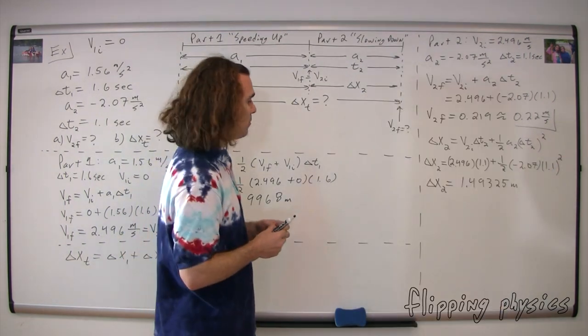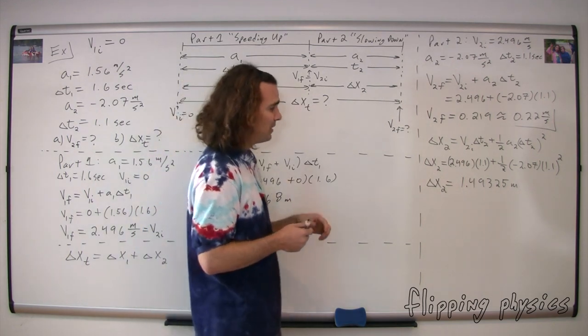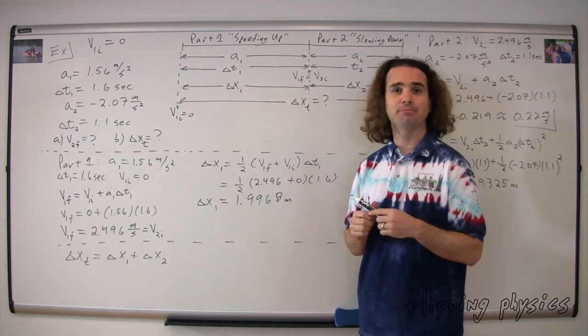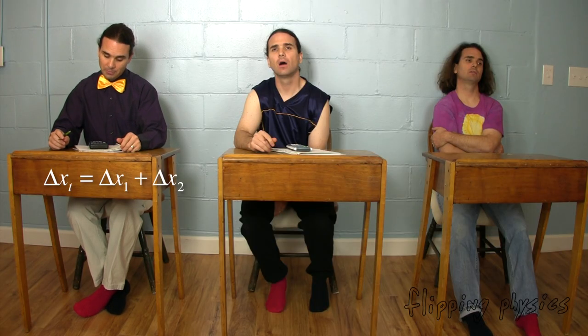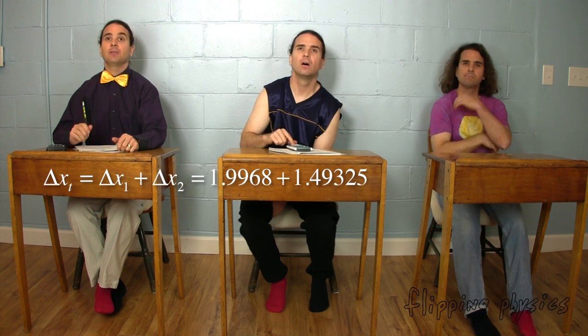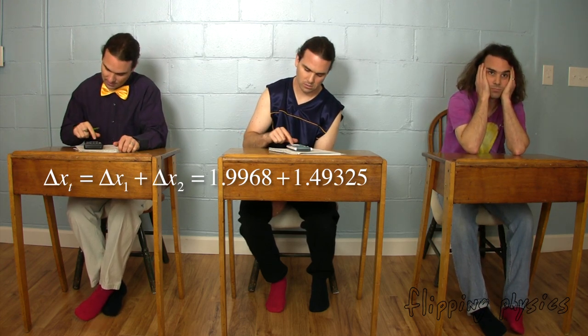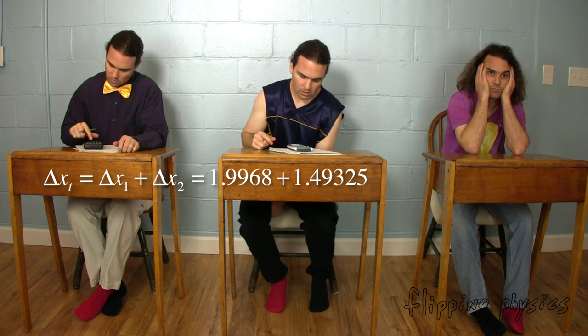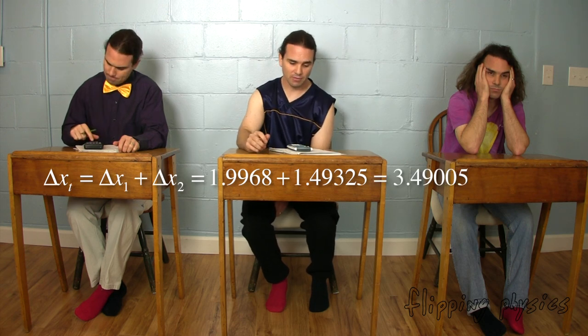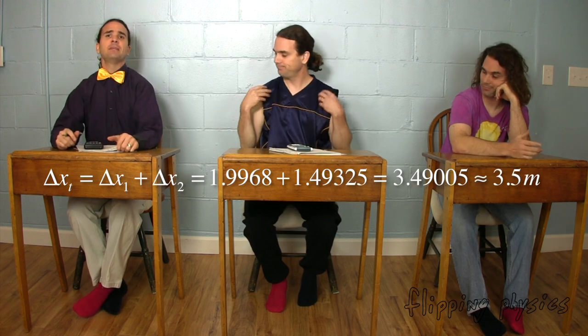Mr. P.: We have figured out the displacement for part one. Now we need the displacement for part two. Bo, how are we going to do that? We can use the UAM equation: displacement for part two equals the initial velocity two times the change in time two, plus one half times the acceleration two times the change in time for part two squared. Plugging in the numbers: 2.496 times 1.1 plus one half times negative 2.07 times 1.1 squared, which gives us 1.49325 meters. Great, we are almost done. The total displacement equals displacement for part one plus displacement for part two: 1.9968 plus 1.49325 equals 3.49005, rounded to two significant figures — 3.5 meters.